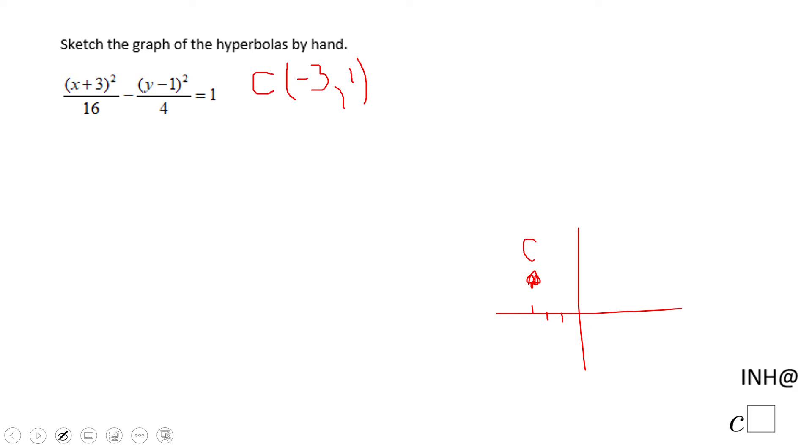x plus 3 squared over 16 minus y minus 1 squared over 4. So that should tell us that y equals 1. You notice this is the focal axis.